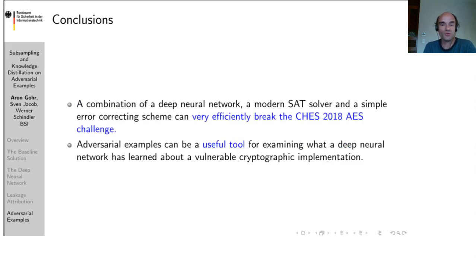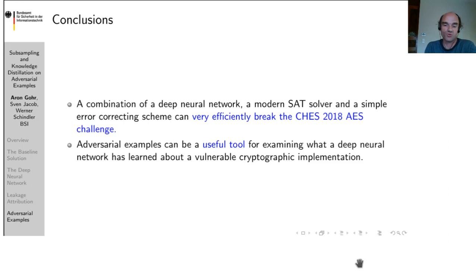In conclusion, a combination of a deep neural network, a modern SAT solver, and a simple error correcting scheme can solve the CHESS 2018 AES challenge very efficiently with just a single trace. And adversarial examples can be a useful tool for examining what a deep neural network has learned about a vulnerable cryptographic implementation. Thank you for your attention.